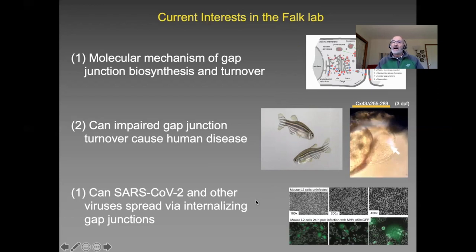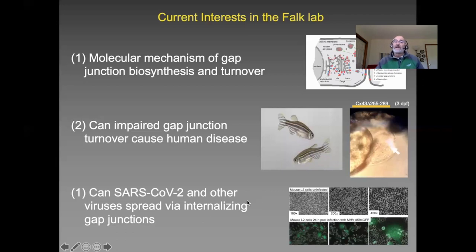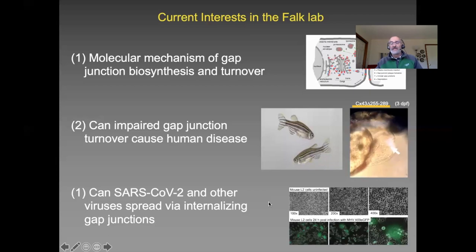Finally, we are asking whether SARS-CoV-2 and other viruses could use internalizing gap junctions as a vehicle to move directly from one cell to the other. We are currently using the mouse hepatitis virus A59 as a model, which is a representative virus for coronavirus disease.